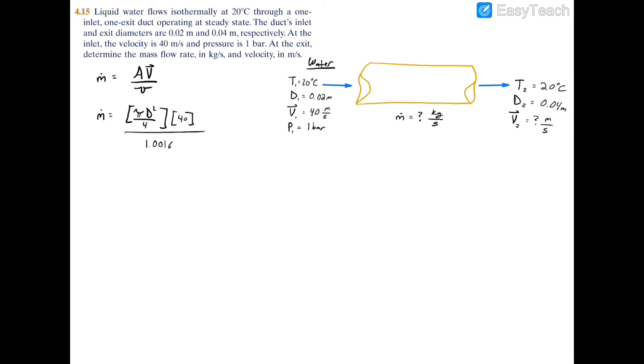So now we can fill in 1.0018 times 10 to the negative third. I might as well just fill in the diameter up here, so the diameter was 0.02 and that's going to be squared. If you plug this into your calculator, you'll find that the mass flow rate equals 12.54 kilograms per second.